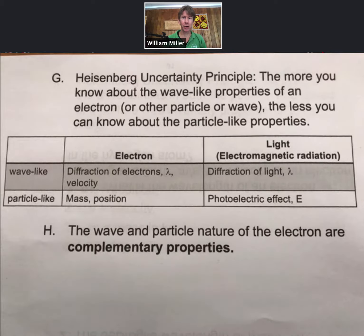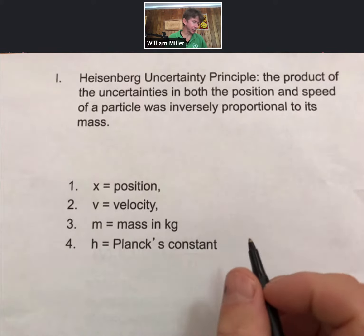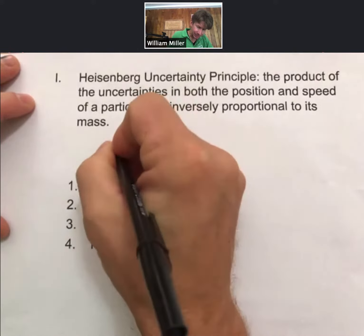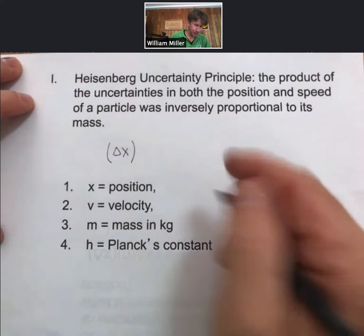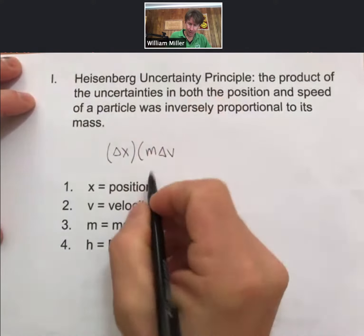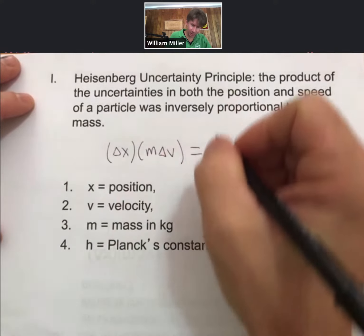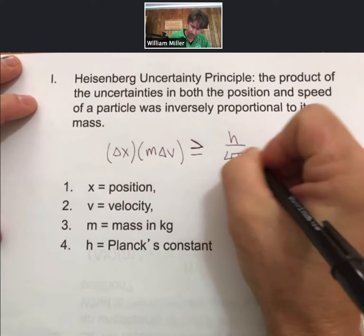From now on, we will only talk about probabilities of where we will find an electron. The Heisenberg uncertainty principle has an equation associated with it, and that equation looks like this: delta x times m times delta v is equal to or greater than h over 4 pi.